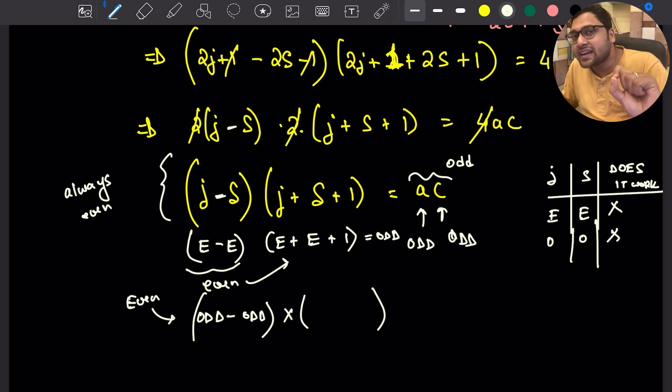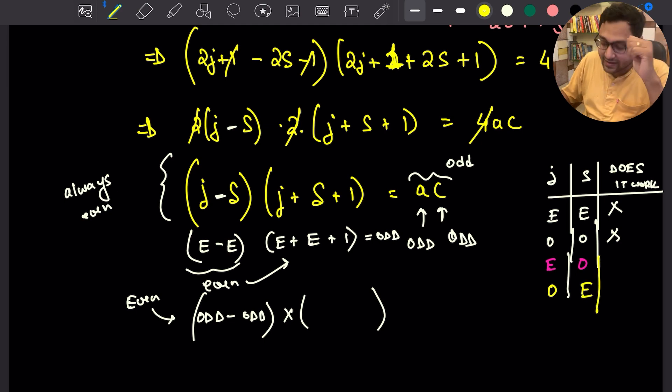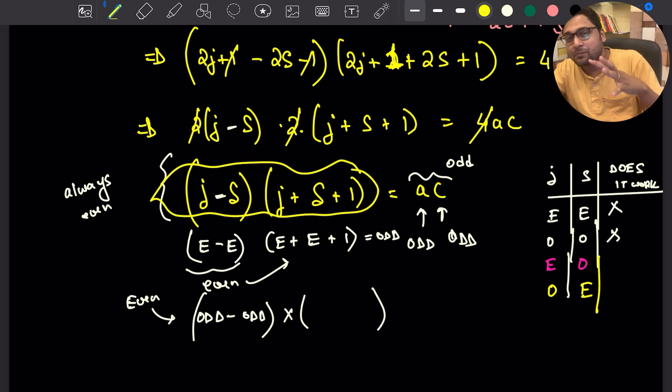That is, J and S are of opposite parity. I will not give you this last line. You have to give me an argument in the comment section. Why J and S cannot be of opposite parity? That means if they are of opposite parity, why is it so that the left-hand side is still even? So that ends the problem.